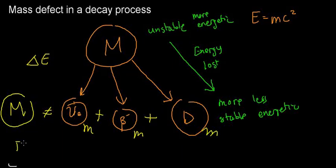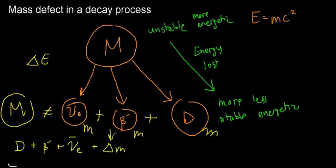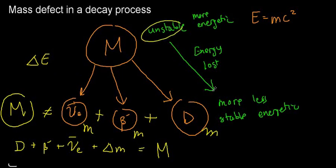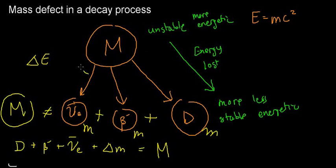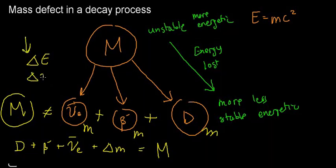So if I take the daughter nucleus mass, the beta particle mass, and the mass of the electron anti-neutrino, and I add the mass defect, I get the mass of the mother nucleus. Being that I'm losing energy in this process — going from an unstable to a more stable situation — energy is liberated. Since I'm losing energy, I'm also in effect losing mass, and that is the mass defect in the decay process.